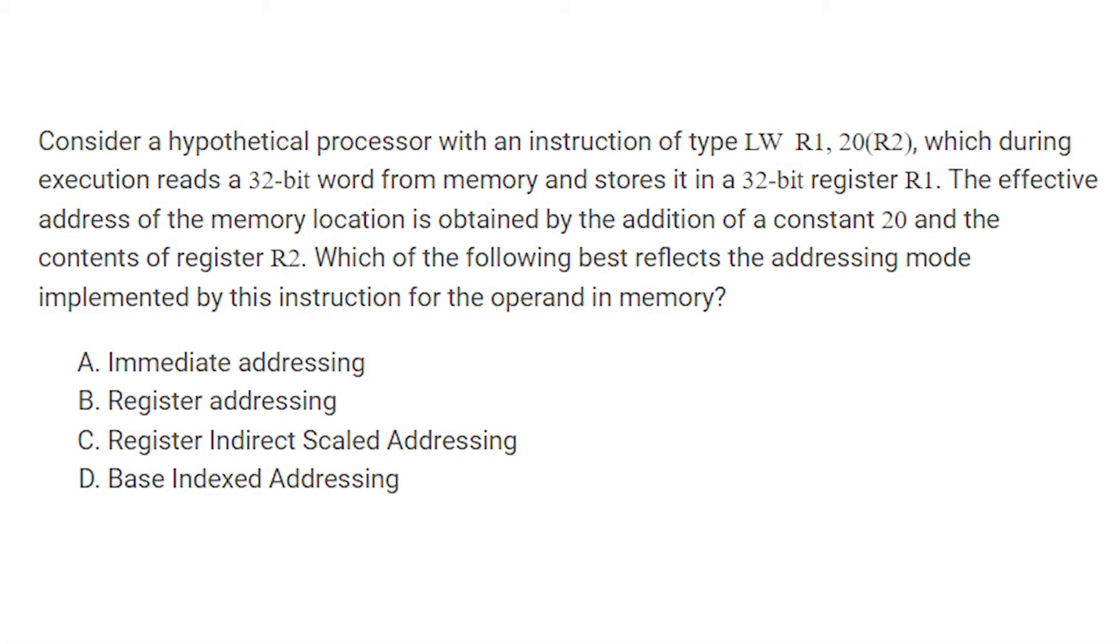Consider a hypothetical processor with an instruction of type LW R1, 20(R2), which during execution reads a 32-bit word from memory and stores it in a 32-bit register R1. The effective address of memory location is obtained by addition of a constant 20 and the contents of register R2.